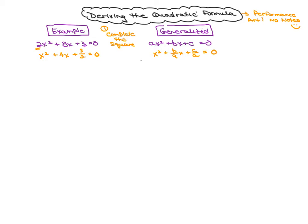Next step is I want to get ready to complete the square, so I want to isolate my variable terms on one side of the equation. Here I'm going to subtract three halves from both sides — that gives me negative three halves — and I'll have to add something here. For my generalized form, I'm going to subtract c/a from both sides, and get ready to complete the square. I know I'm going to have to add something here, and whatever I add to one side, I'll also add to the other.